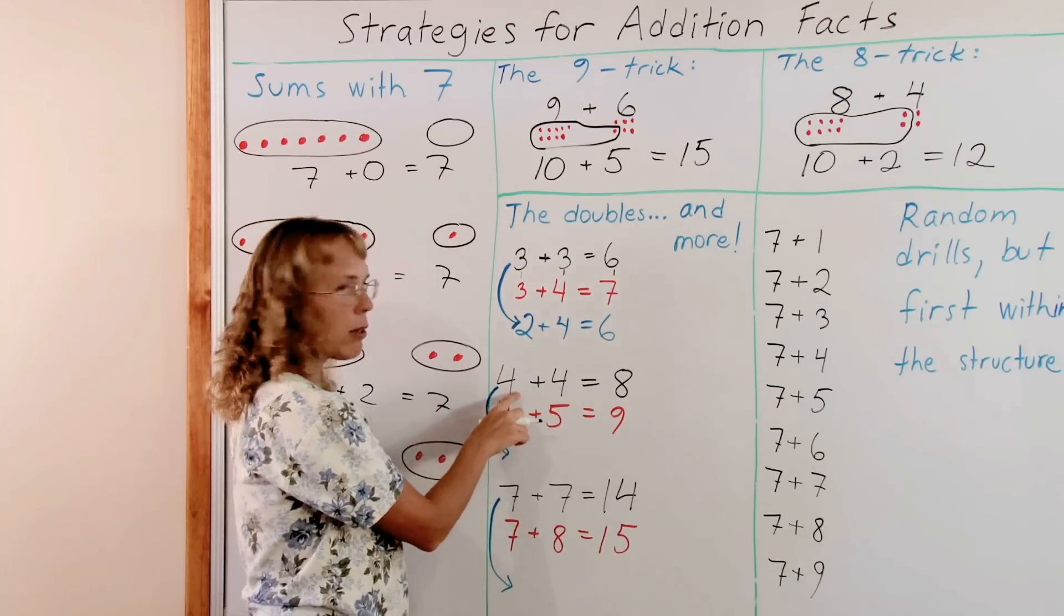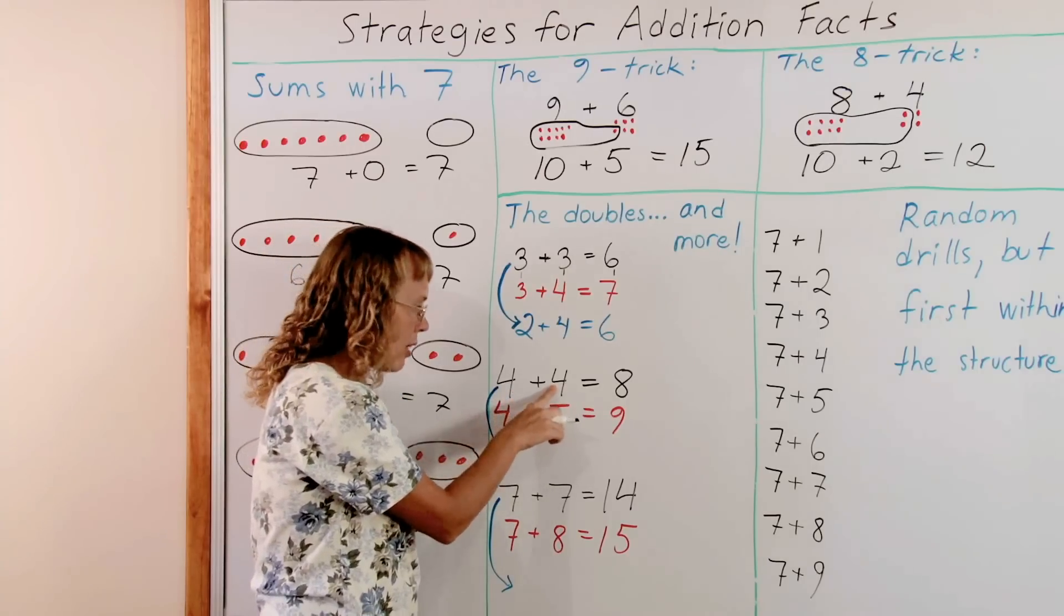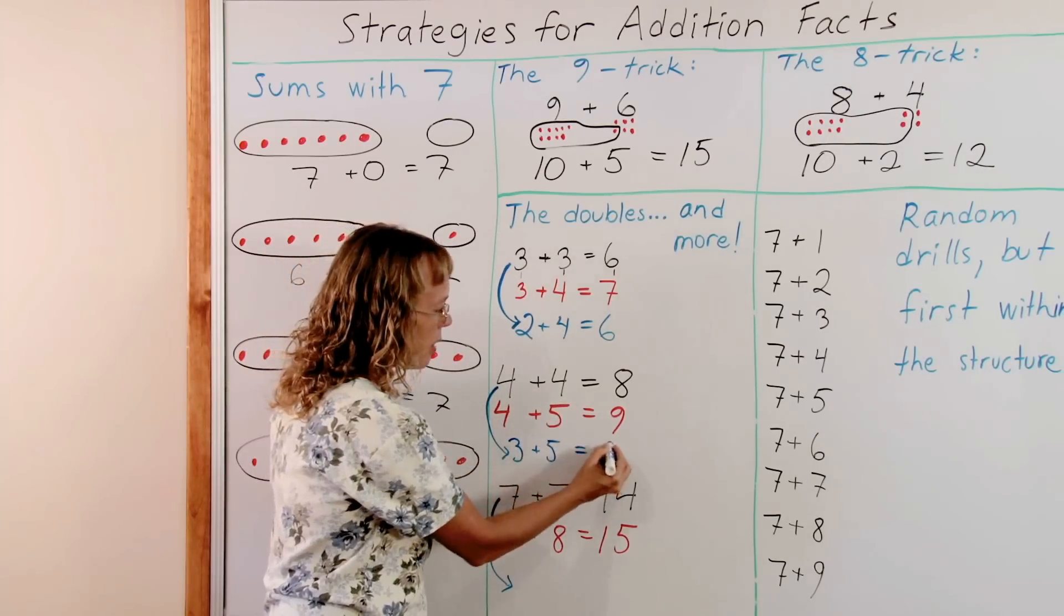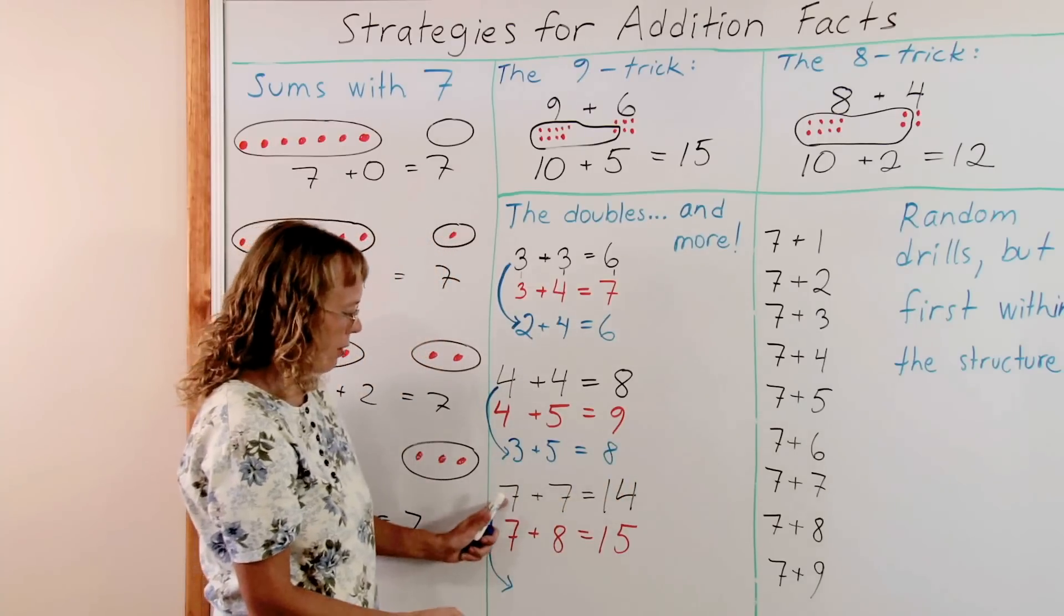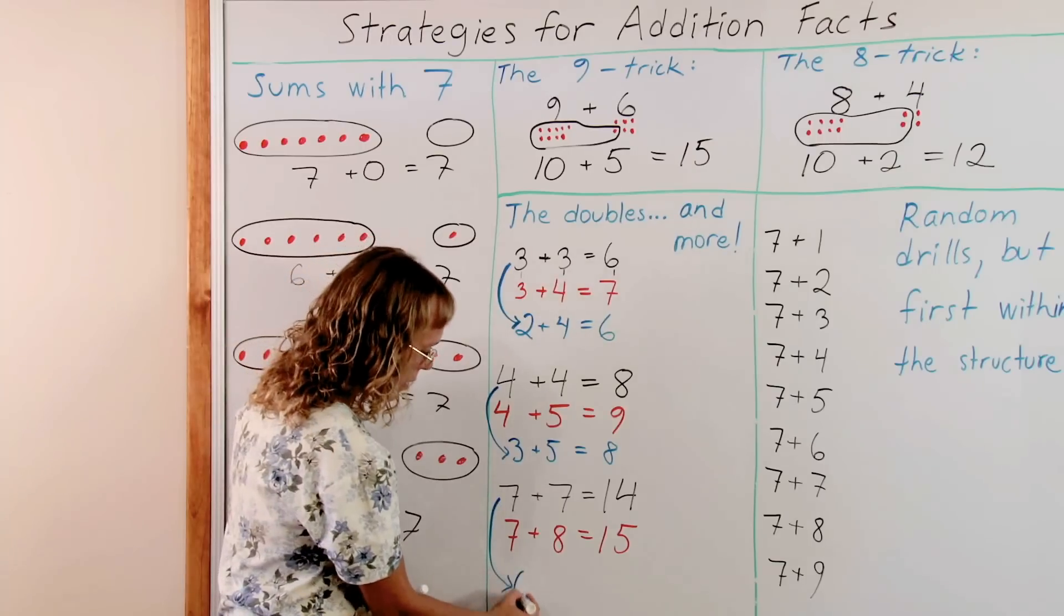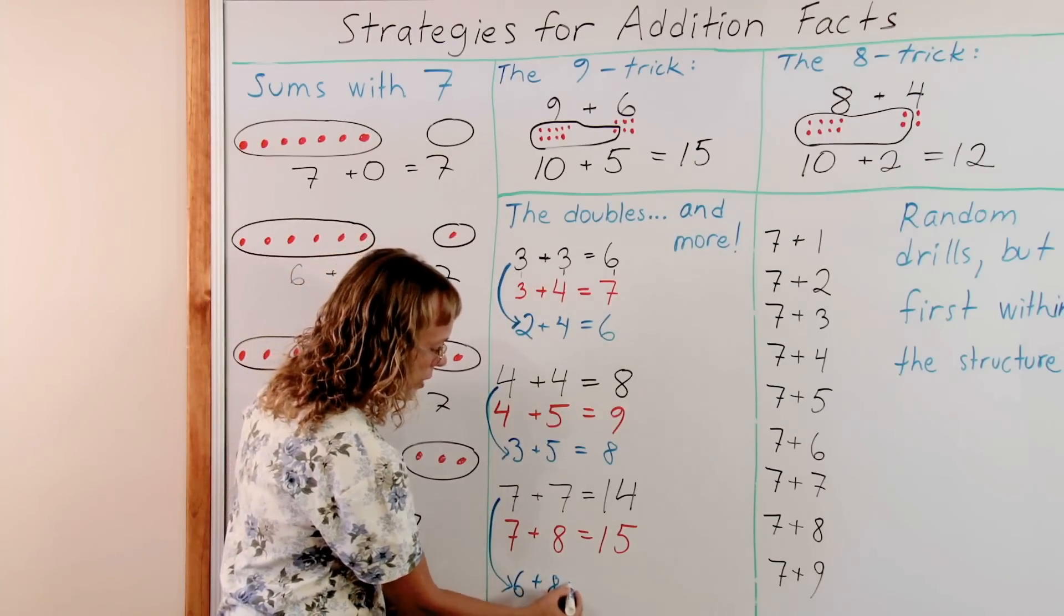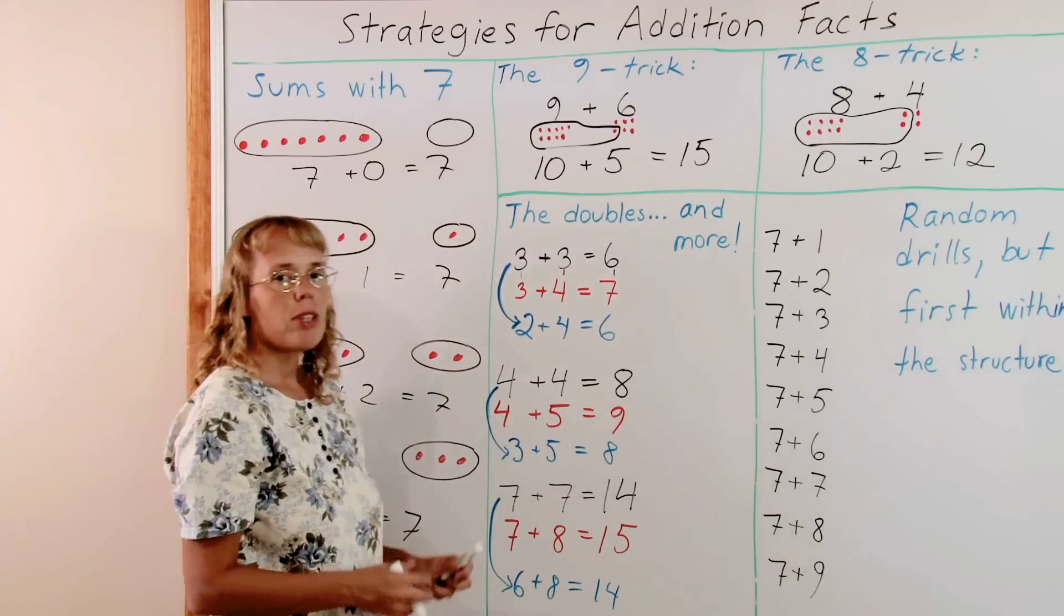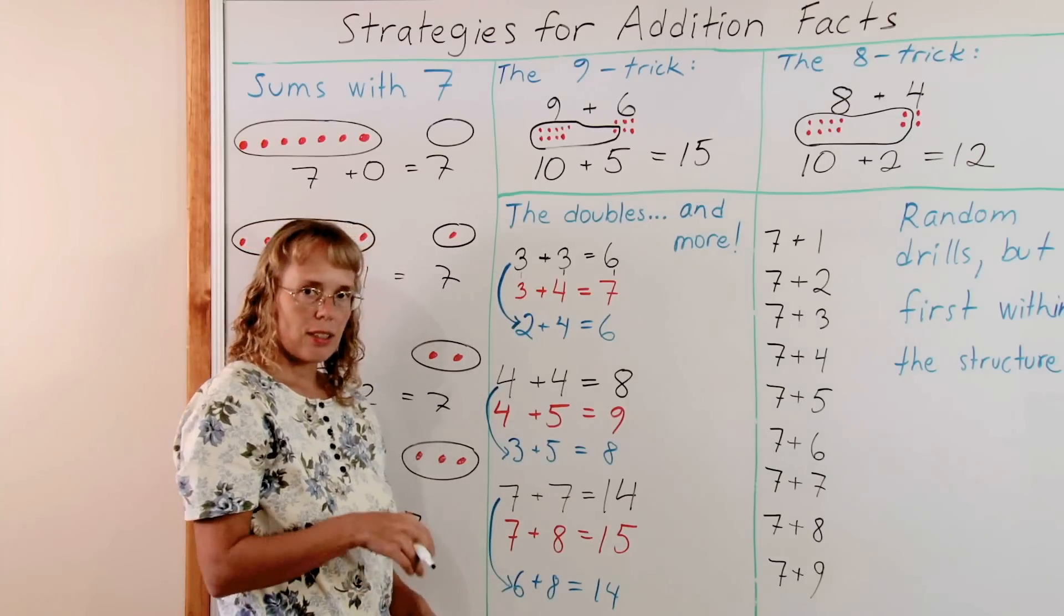Okay. Here 4 and 4. If you take 1 from this 4 and put it to this other 4, you get 3 and 5. And equals 8. And here if you take 1 from the 7 and give it to the other 7, then it is 6 plus 8 equals 14. And so on. For each double fact you have that kind of fact.